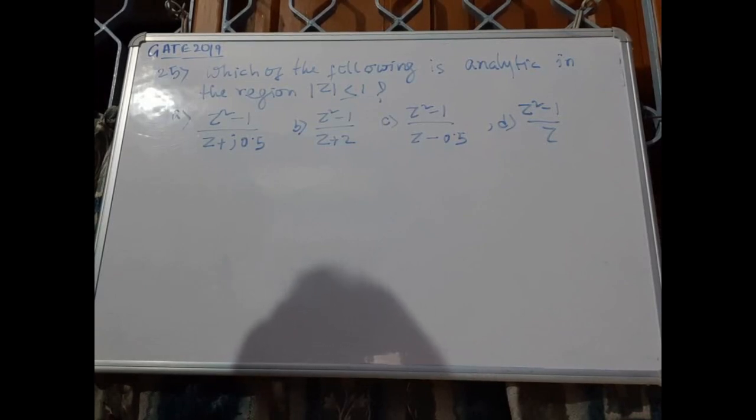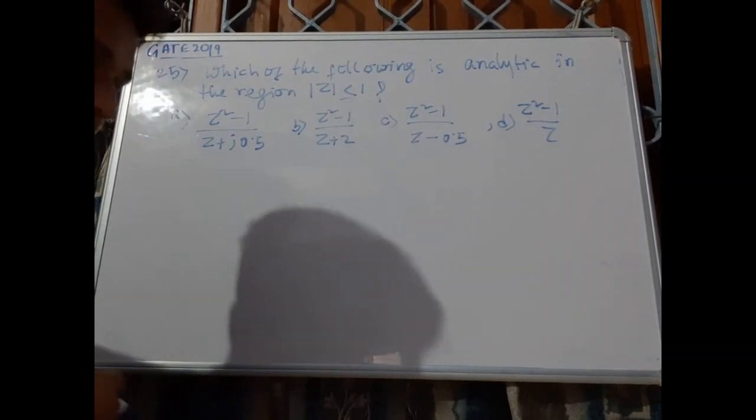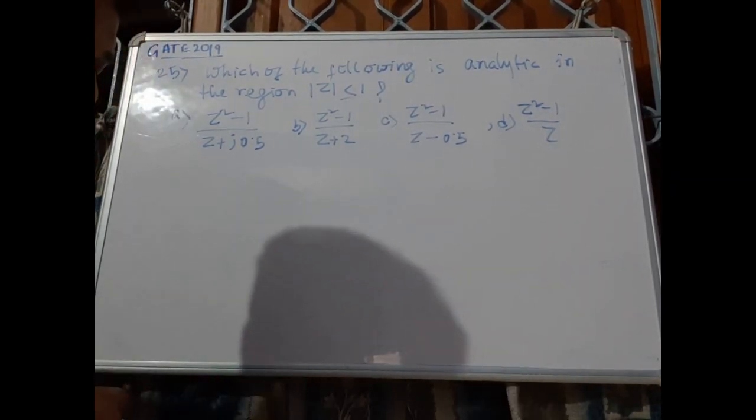This is problem number 25 from GATE 2019. Which of the following is analytic in the region |z| ≤ 1? Option A: (z² - 1)/(z + j0.5). Option B: (z² - 1)/(z + 2). Option C: (z² - 1)/(z - 0.5). And option D: (z² - 1)/z.